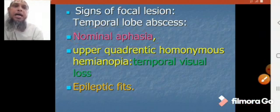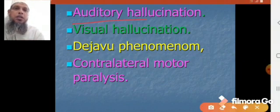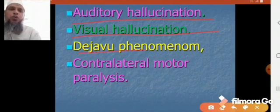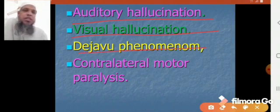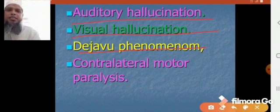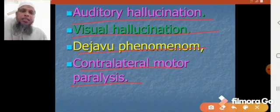Other symptoms include visual and auditory hallucination, and the déjà vu phenomenon — which is the momentary familiarity with a new environment. There is also contralateral paralysis with upward spread: first facial paralysis, then arm, then leg; or in inward spread: first leg, then arm, then face.